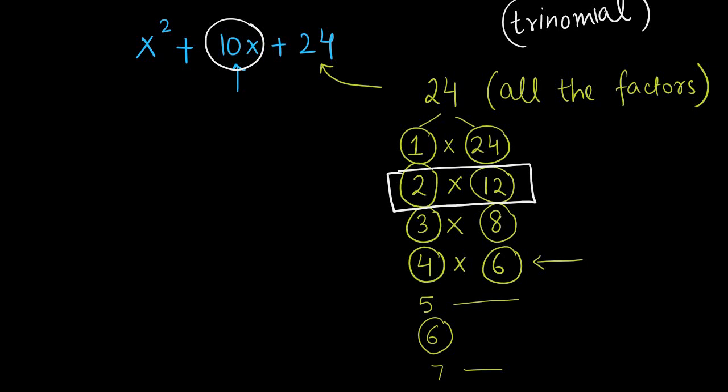2 and 12 gives you 10. You can do addition or subtraction. So how can you make 2 and 12 a 10? 12 minus 2 is 10. That means you can write this 10x as 12x minus 2x.